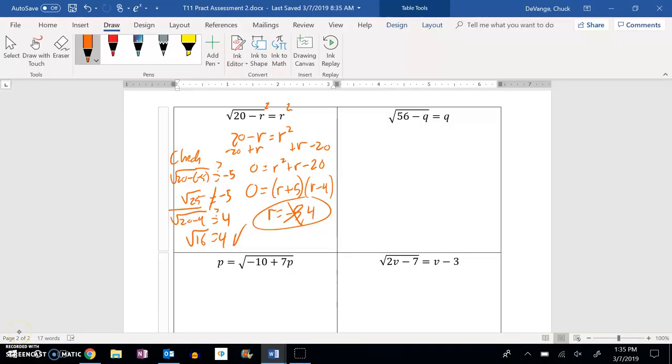All right, let's go ahead and do this next one, this number 8, second one on the back. Square both sides to get rid of that square root.